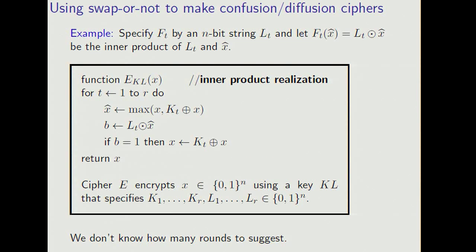So in the last minute, I want to talk about, first, how to use swap-or-not to construct a confusion-diffusion cipher. So far in the talk, I've been assuming that the ft are random functions. To make a confusion-diffusion cipher, we want to use an ft with a smaller description.